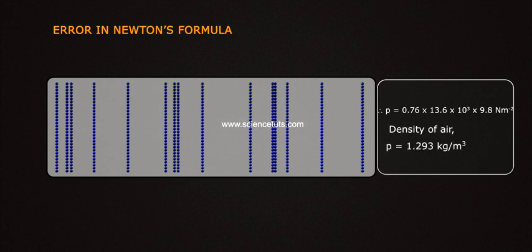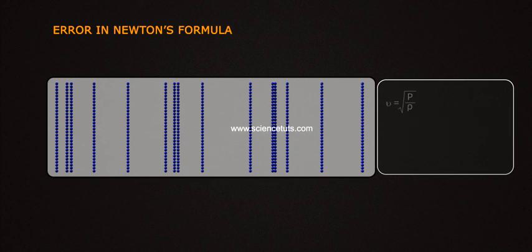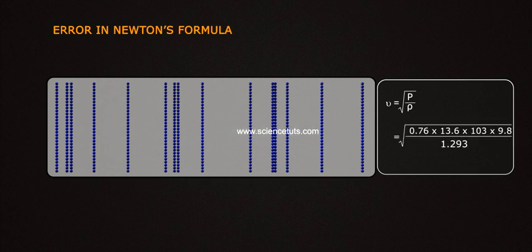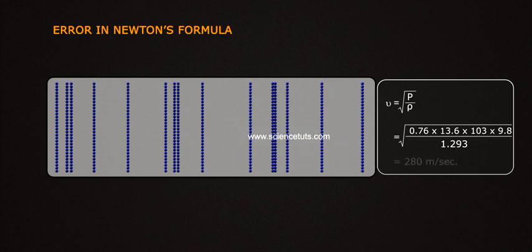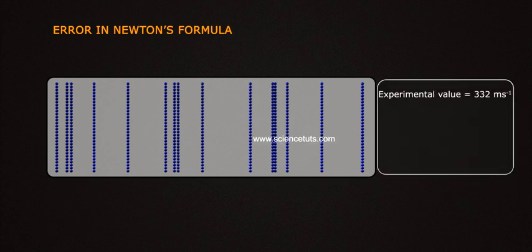The density of air, rho equals 1.293 kg per meter cube. From this, nu equals square root of p by rho equals square root of (0.76 × 13.6 × 10³ × 9.8) divided by 1.293, which equals 280 m/s. The experimental value of the velocity of sound in air at NTP is 332 m/s.